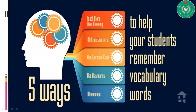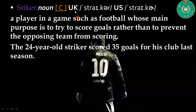Before moving into the main text, we're going to learn some new vocabulary. The first vocabulary word is 'striker,' which is a countable noun. Its pronunciation is 'striker' in both UK and US English. It means a player in a game such as football whose main purpose is to score goals rather than to prevent the opposing team from scoring. For example: the 24-year-old striker scored 35 goals for his club last season.